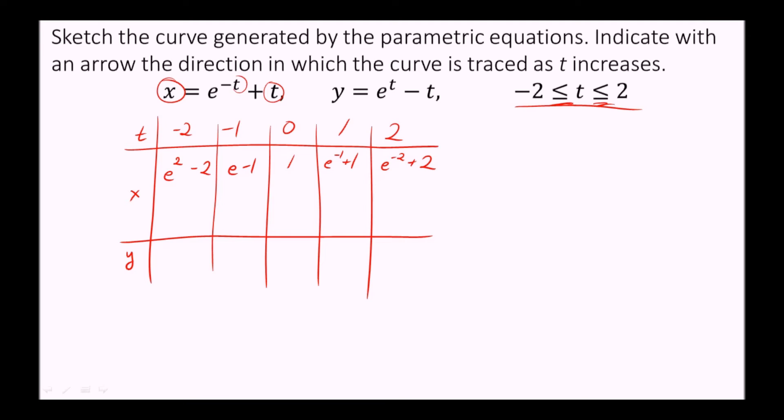Again, we'll do the same thing with y, just the equation is slightly different. So plugging in negative two for t in the y equation, we have e to the negative two plus two, e to the negative one plus one, one, e minus one, and e squared minus two.